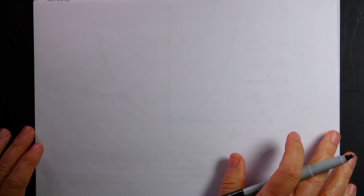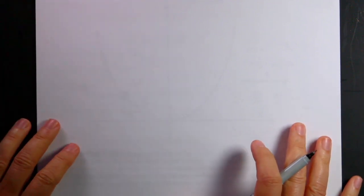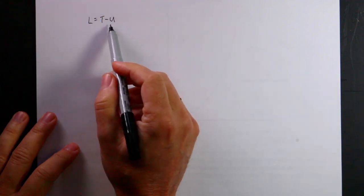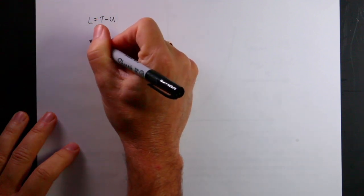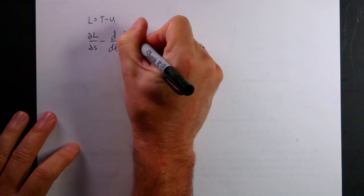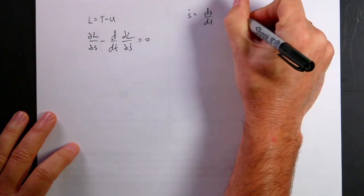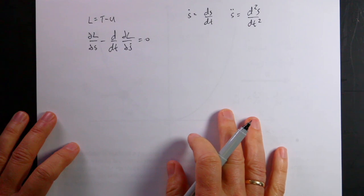The key to Lagrangian mechanics is to pick a variable to describe the system and find the least action, where the action is the integral of the Lagrangian. In short, L equals T minus U — the Lagrangian is kinetic energy minus potential energy. With one degree of freedom, which I have here, the Euler-Lagrange equation must hold: ∂L/∂s minus d/dt(∂L/∂ṡ) = 0, where ṡ = ds/dt and s̈ is the second derivative. We use dot notation because we think it's cool.